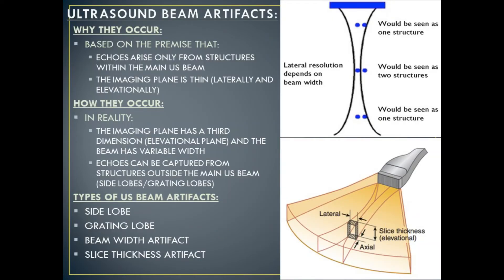Our first category of ultrasound artifacts are ultrasound beam artifacts. These occur because ultrasound is based on the premise that echoes arise only from structures within the main ultrasound beam, and the imaging plane is thin both laterally and elevationally. In reality, the imaging plane has a third dimension — the elevational plane — and the beam has a variable width. Echoes can be captured from structures outside the main ultrasound beam. Types of ultrasound beam artifacts are side lobes, grating lobes, beam width artifacts, and slice thickness artifacts.